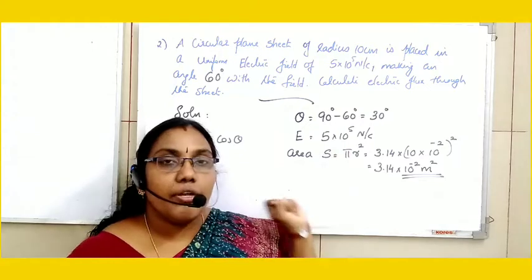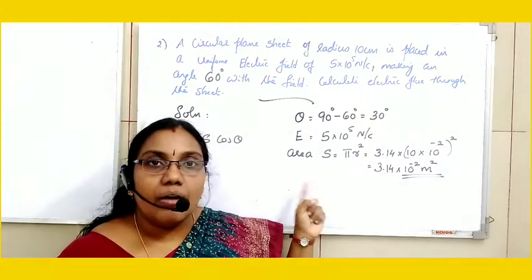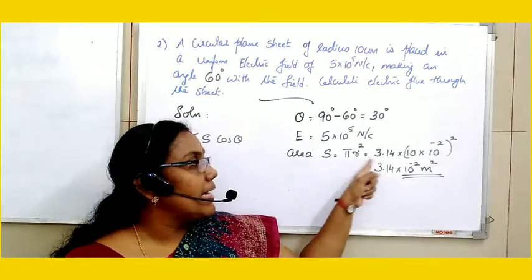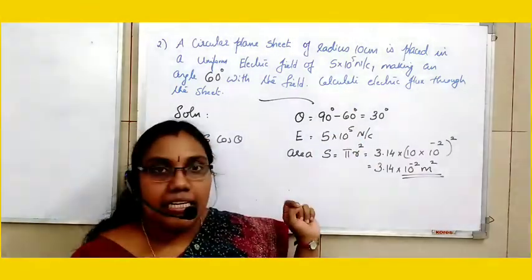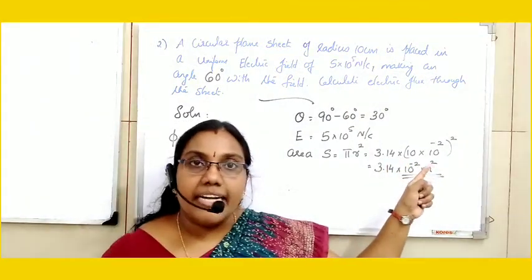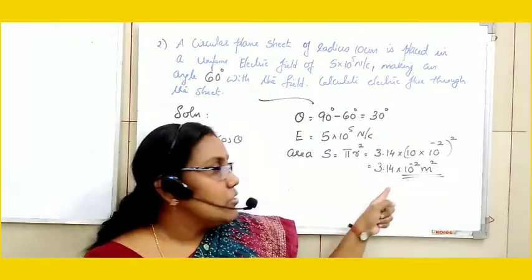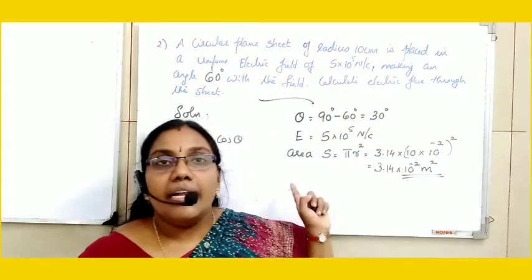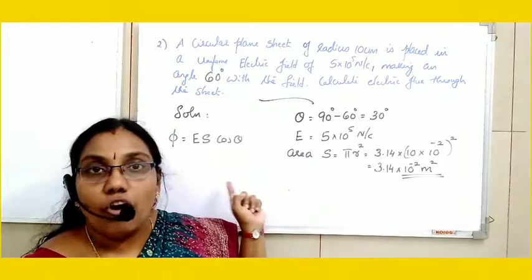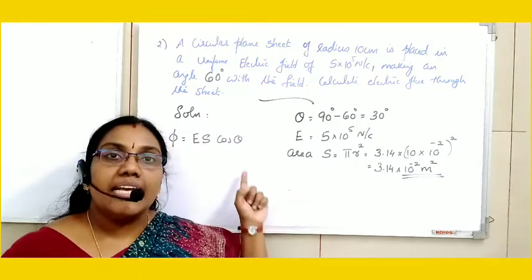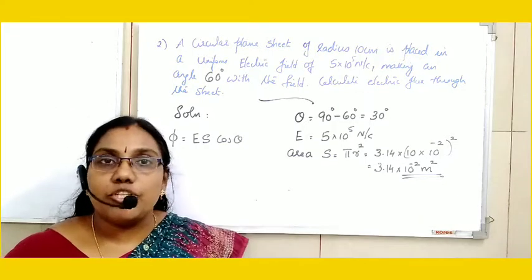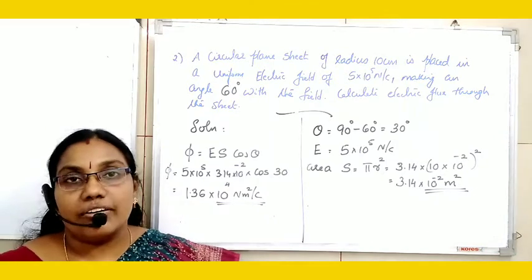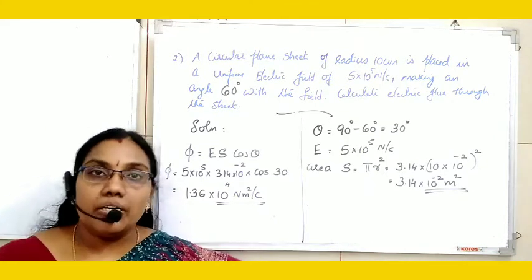Electric field is 5 × 10⁵ N/C and this is a circular sheet, so area = πr². Substituting π = 3.14 and radius = 10 cm = 10 × 10⁻² m, the area is 3.14 × 10⁻² m². Substituting in the formula φ = ES cos θ and simplifying, we get the answer as 1.36 × 10⁴ N·m²/C.